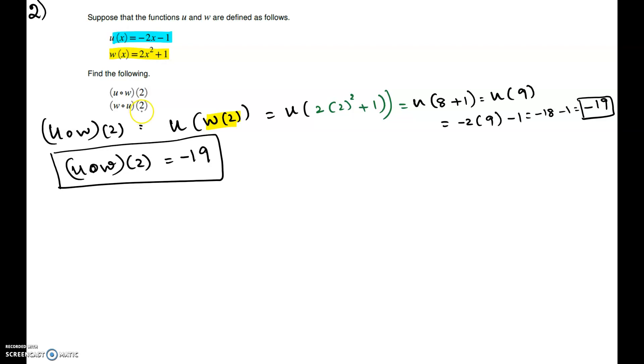Now, let's try the second part, w composite u at 2. So, w composite u at 2. Now, let's try w at u of 2. That's the way it's defined.